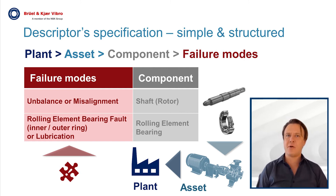Let's take an example — a failure mode here could be an outer ring fault of the rolling element bearing. Imagine a rolling element bearing itself consists of components: outer ring, inner ring, and balls. So an outer ring fault, for example,